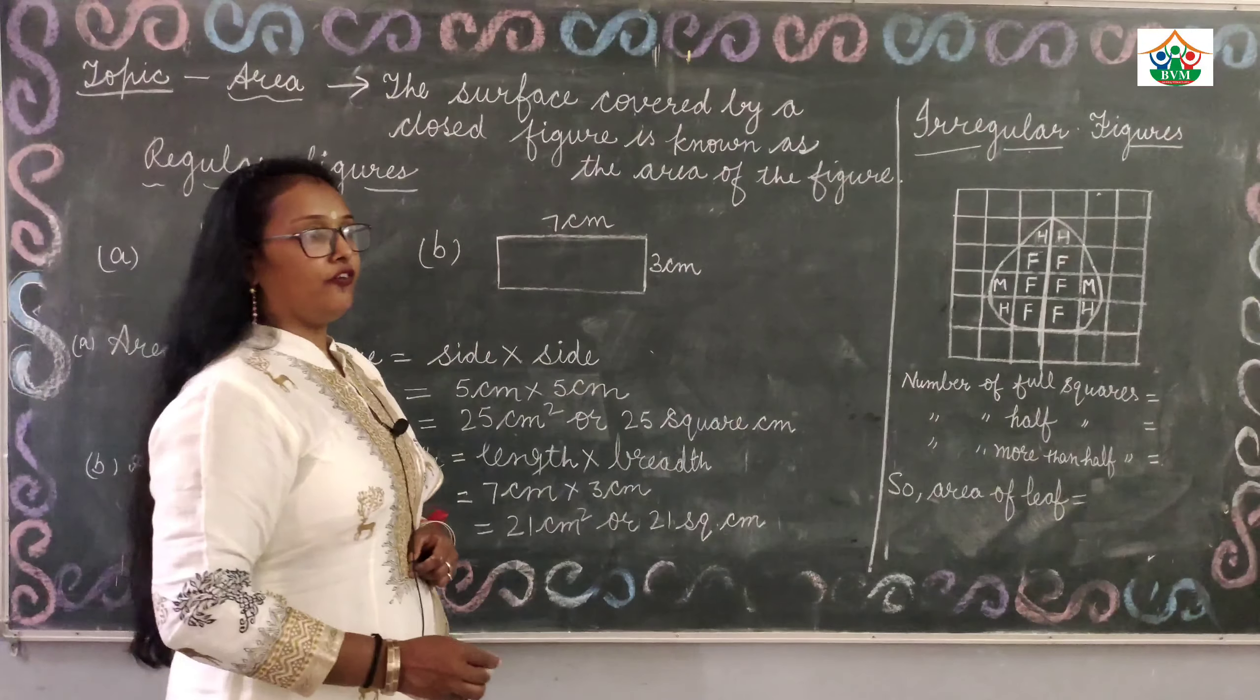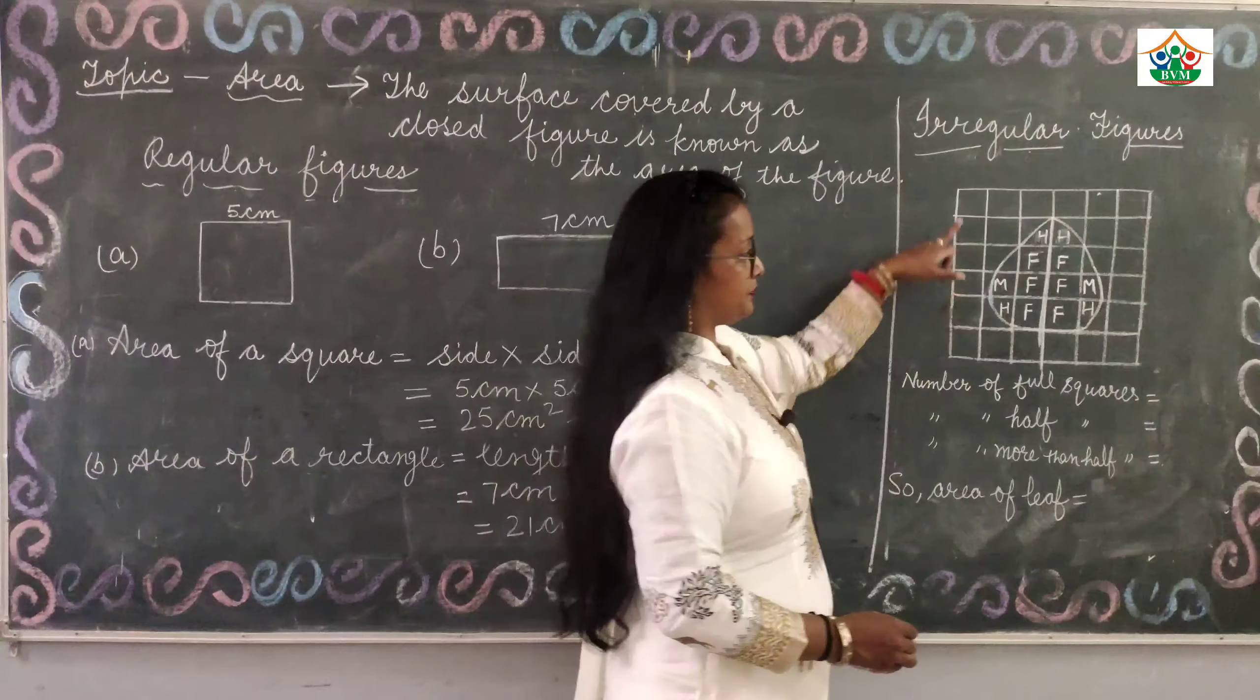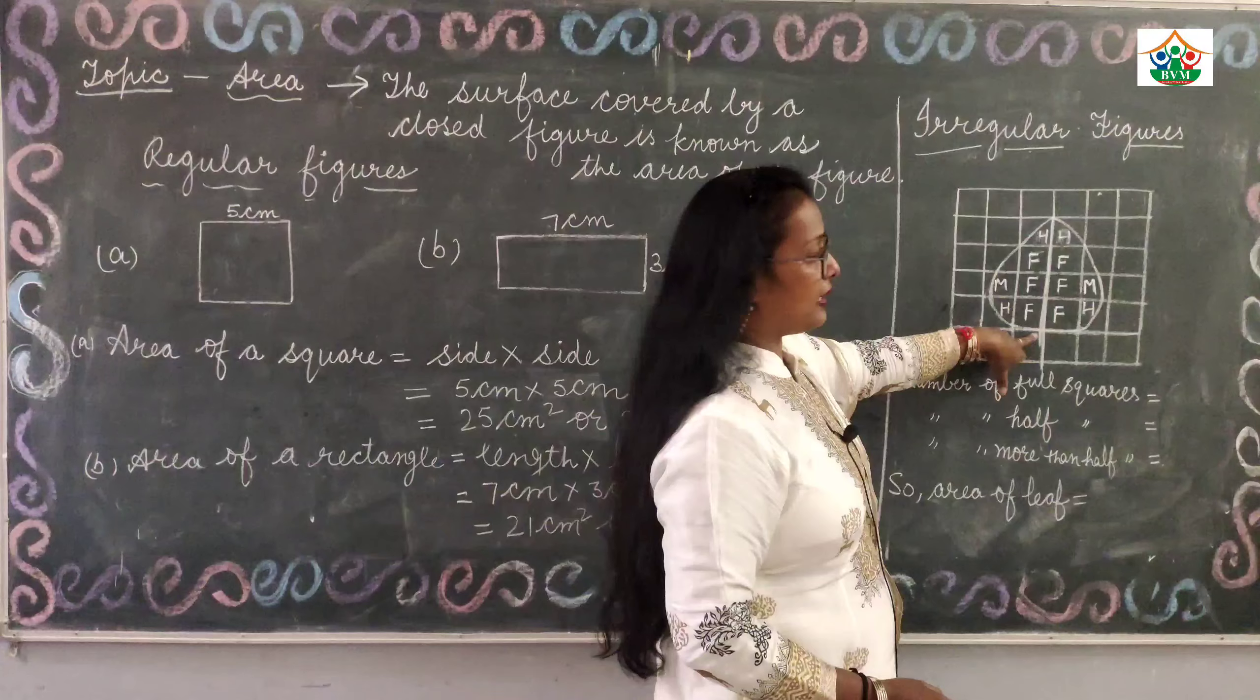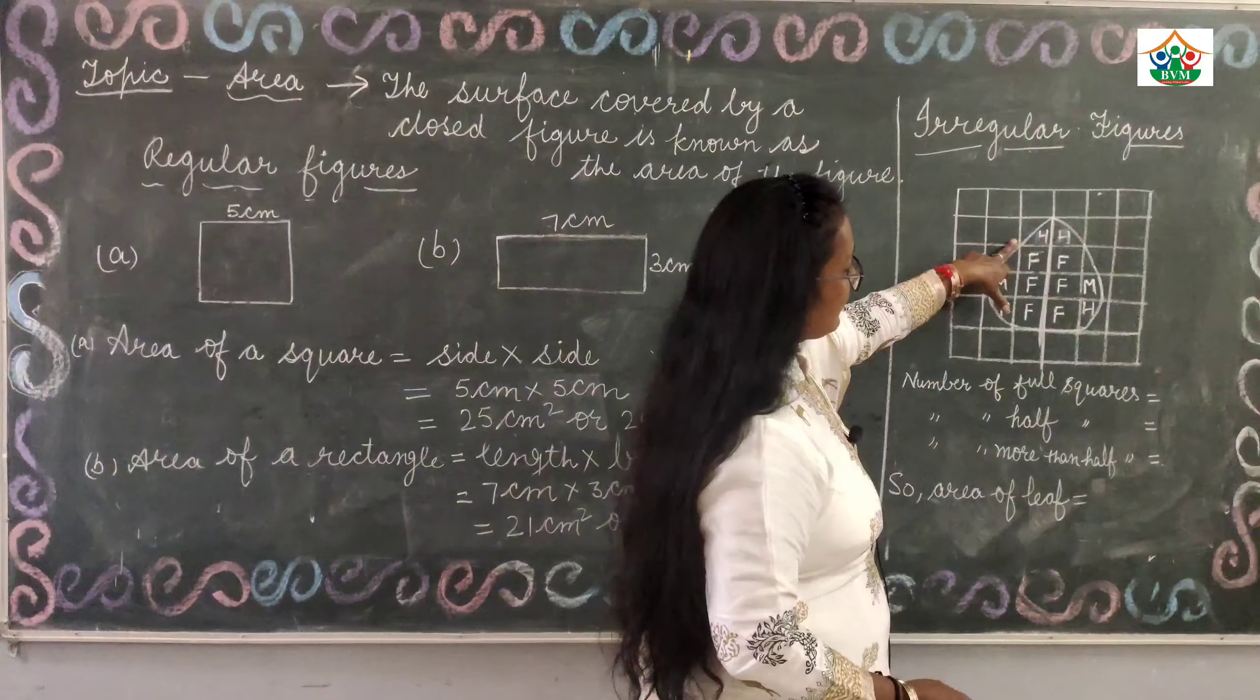Now we will find the area of irregular figures. We will find the area of leaf. Here is a leaf now, we will find the area of leaf.